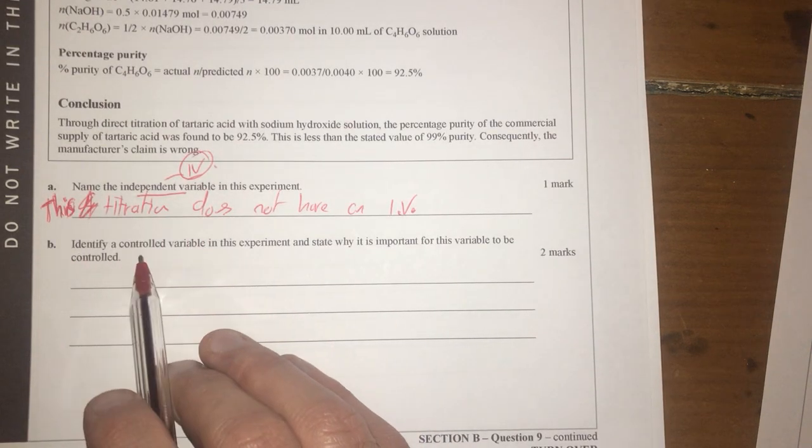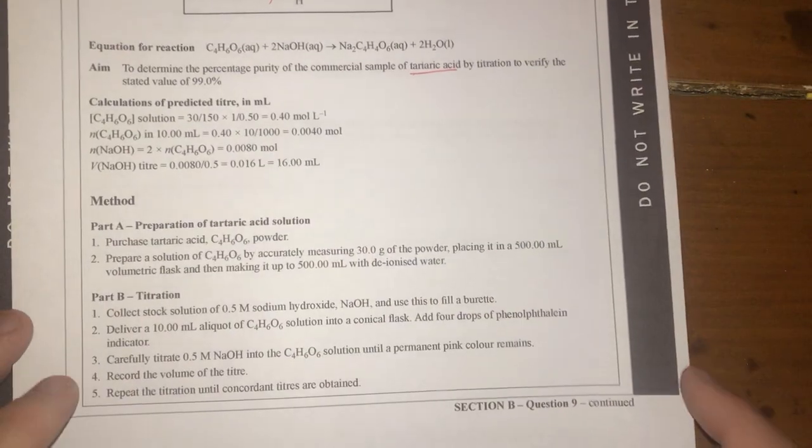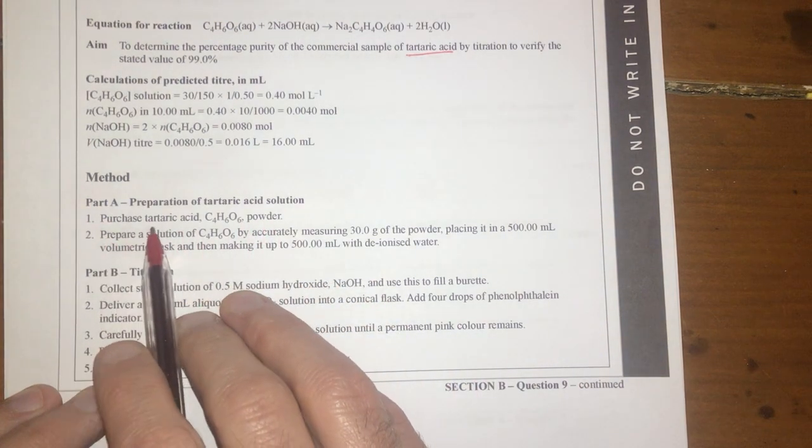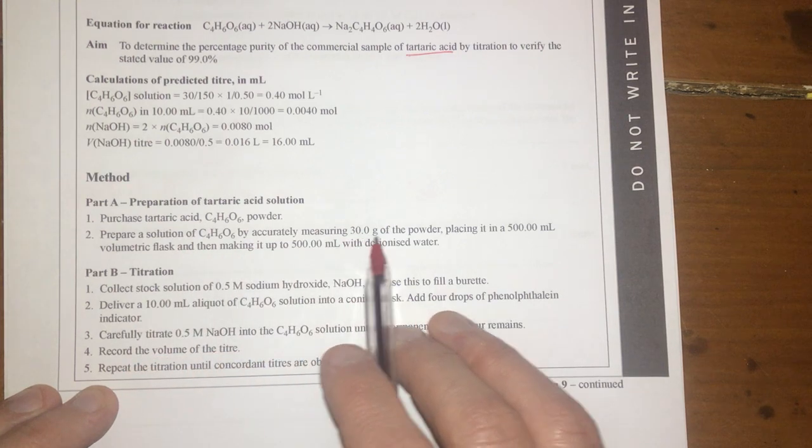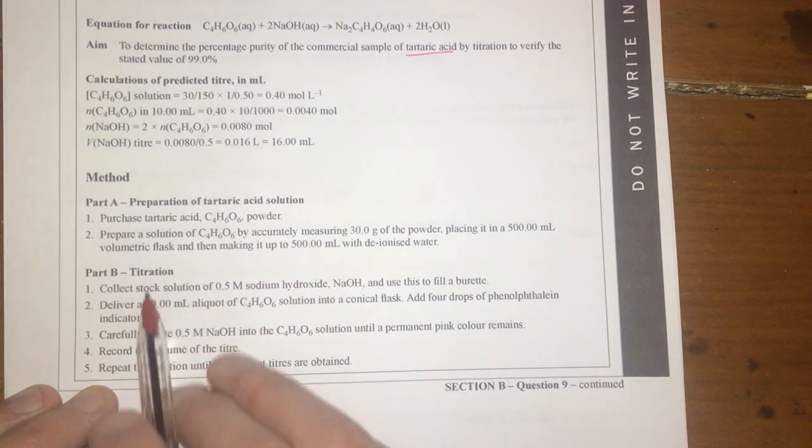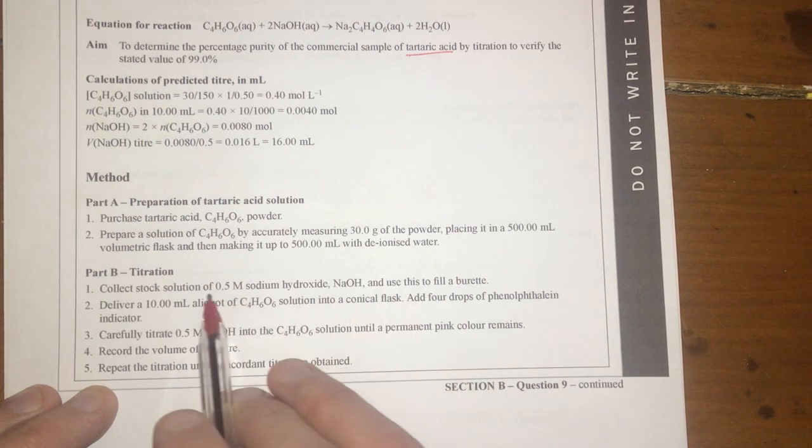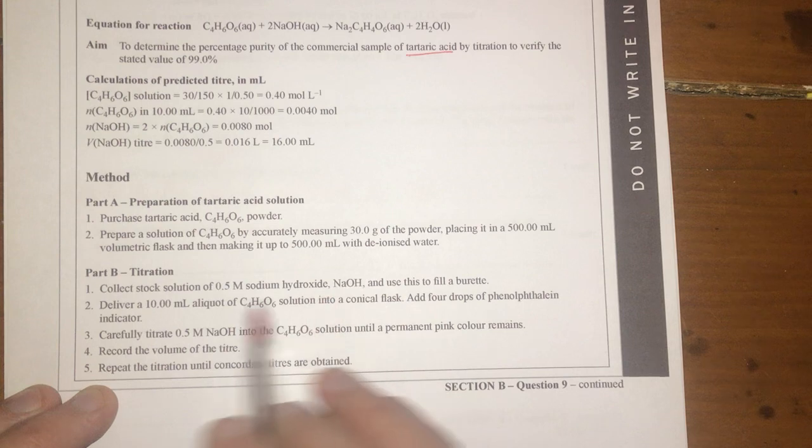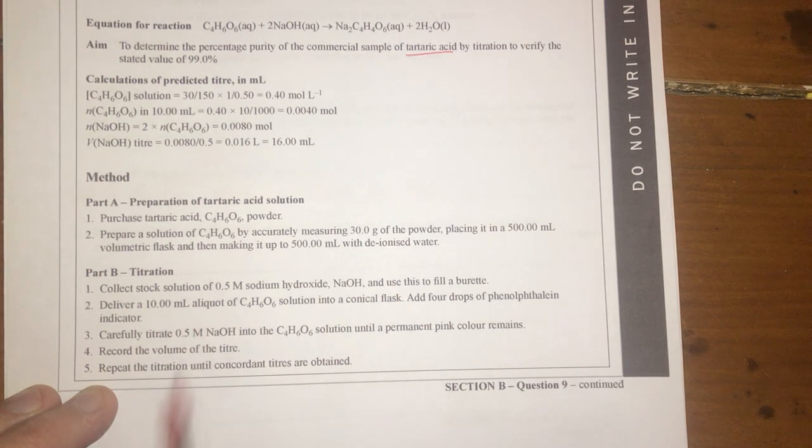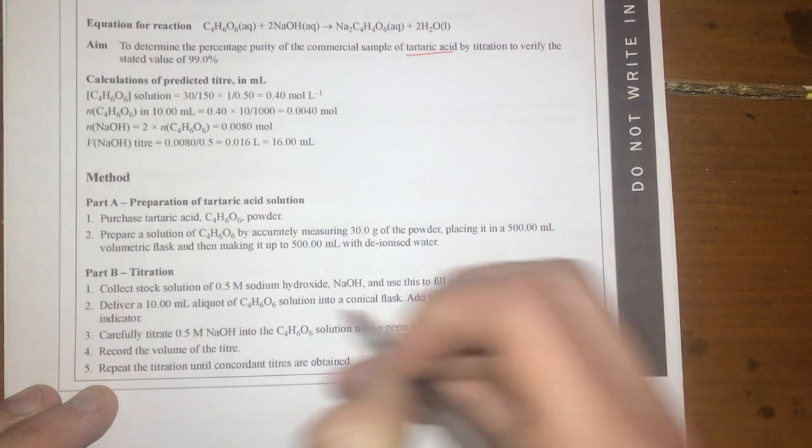But identify a controlled variable in this experiment and state why it is important for this variable to be controlled. So let's have a look at what they've done in the method and find something that they've done each time. We've purchased the powder, prepared the solution by accurately weighing 30 grams. We're only doing that once. All this preparation is just once. Titration, we're repeating over and over. So this is where the control comes into it. We've got a stock solution, so that's controlled. So therefore, your concentration of sodium hydroxide, that's a controlled measurement. Your aliquots, this is a controlled variable. So therefore, your volume of your aliquot has to be the same each time. They're stating that. We're adding four drops of phenolphthalein indicator. That's also controlled. So that's one, that's two, that's three.